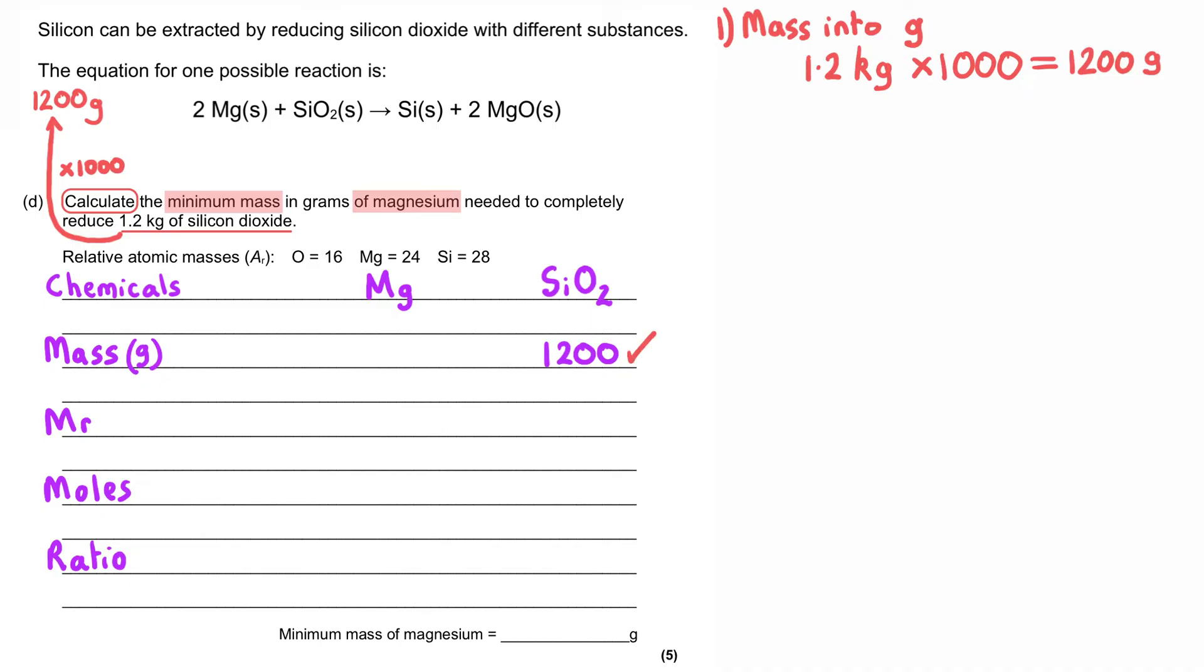And then we need to calculate the relative formula mass of silicon dioxide, and to do that we take silicon, 28, and we add it to 2 lots of 16, because the formula is SiO2, and that little 2 belongs to the element that just went before it, which is the oxygen. So 28 plus 16 plus 16 gives us 60 as our MR of silicon dioxide, and that gets us our second marking point.